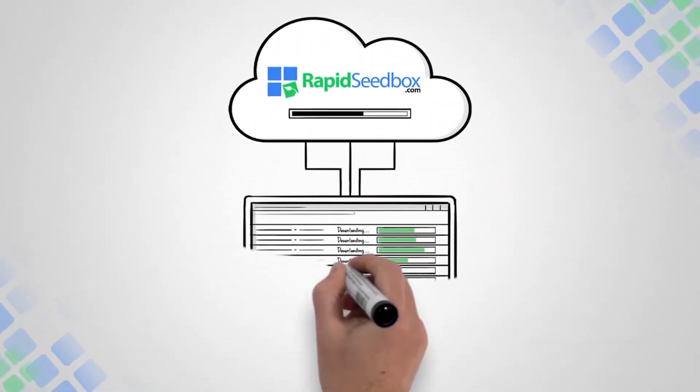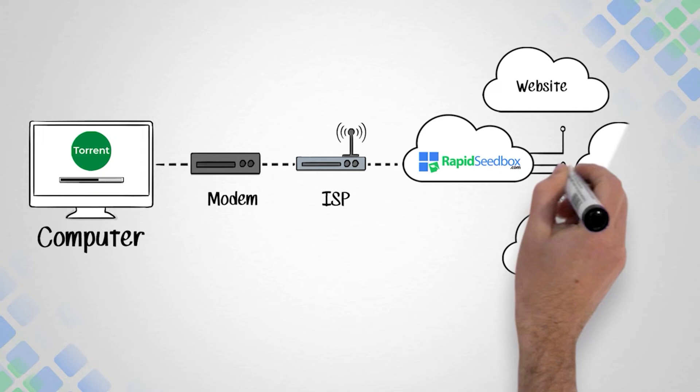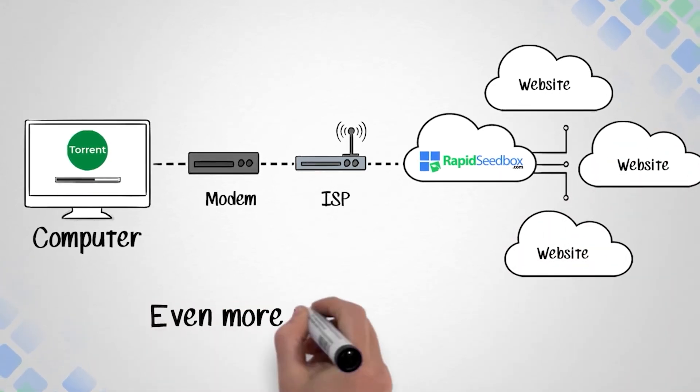Using your seedbox is easy. It's just like accessing files from a hard drive or cloud storage. Along with epic performance, a seedbox keeps your online activity private, even more private than a VPN.